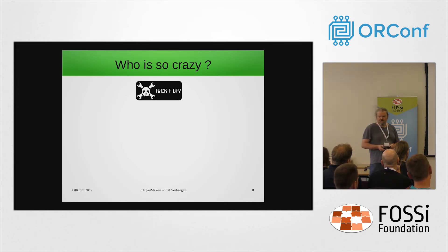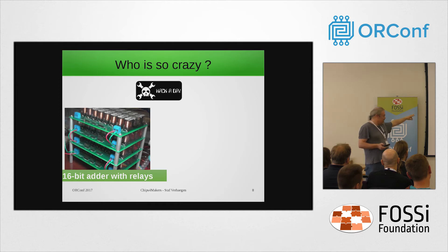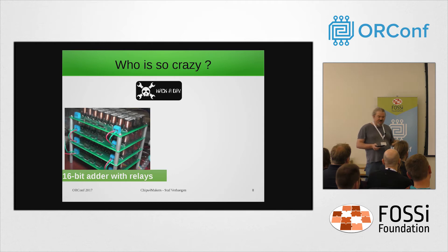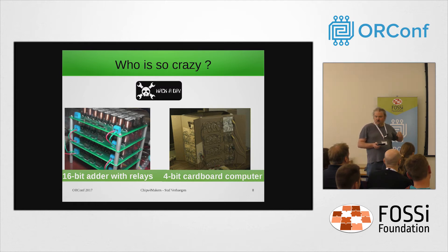If you want to find crazy people, check Hackaday. There's a guy who discovered you can make a full adder with two physical relays - doing XOR and an AND gate. He built a 60-bit adder with four boards all using relays, and even made an instructional video on how it works. Then there's another one who made a four-bit cardboard computer. There are people who want to do these things, and if you make it cheap enough, they can inspire others to fund them.